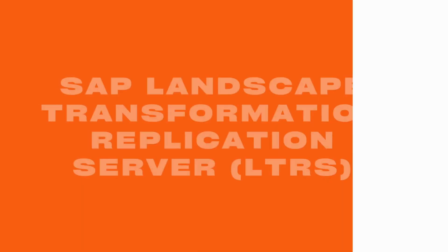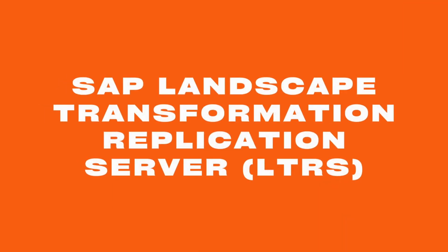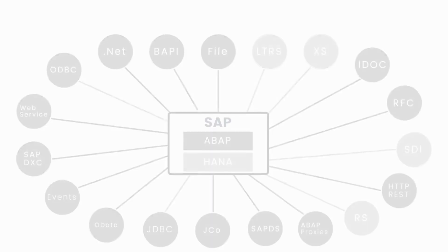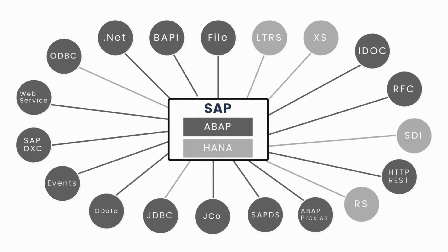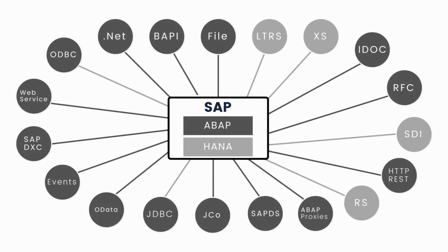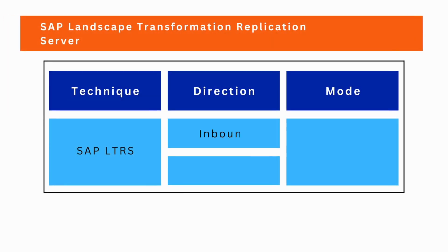Hello everyone. Let's now talk about SLT — Landscape Transformation Replication Server. SLT enables real-time data replication and synchronization between heterogeneous systems. With its advanced transformation and filtering capabilities, SLT makes it easy to manage and monitor your data replication process in real-time. Choose SLT to simplify your data management and keep your systems in sync. SLT supports both inbound and outbound integration, and it works with asynchronous mode.